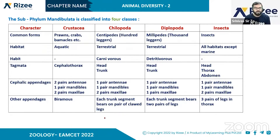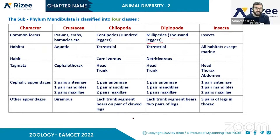Chilopoda includes centipedes, which have a hundred legs. Diplopoda includes millipedes — 'milli' means thousand — so millipedes have thousands of legs. Common forms and habitats will now be discussed for each class.